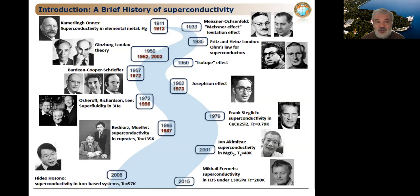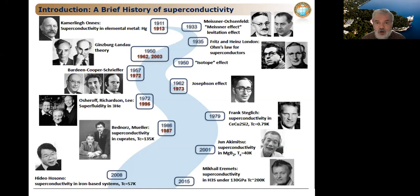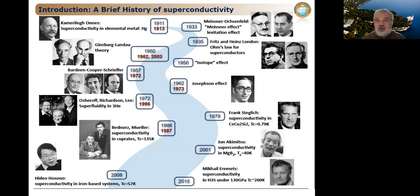Landau's prize was for the theory of phase transitions and Fermi liquid, while Ginzburg's was awarded together with Alexei Abrikosov and Anthony Leggett for the phenomenological theory of superconductivity. In 1951, the isotope effect was discovered, demonstrating that the temperature of the superconducting transition is inversely proportional to the square root of the isotope mass, immediately suggesting that the microscopic mechanism involves electron-phonon interaction.